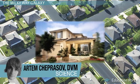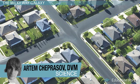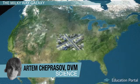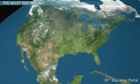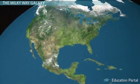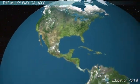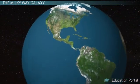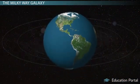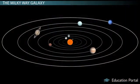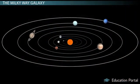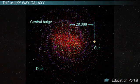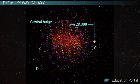You live at home. Your home lives in a city. The city lives in a state, which lives in a country, which lives on Earth. The Earth lives in our solar system, which calls our galaxy, the Milky Way galaxy, home.